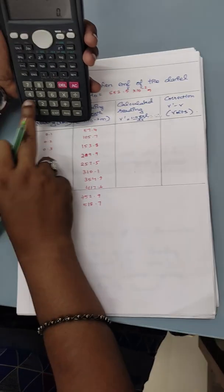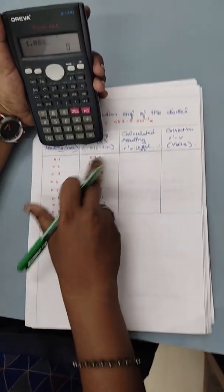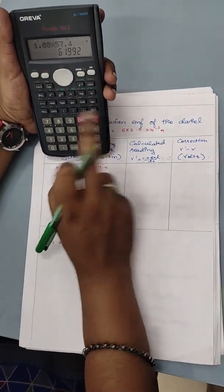Let's see how to do this. So 1.08 into L. L is going to be for this one 57.4. 57.4 is equal to this value.